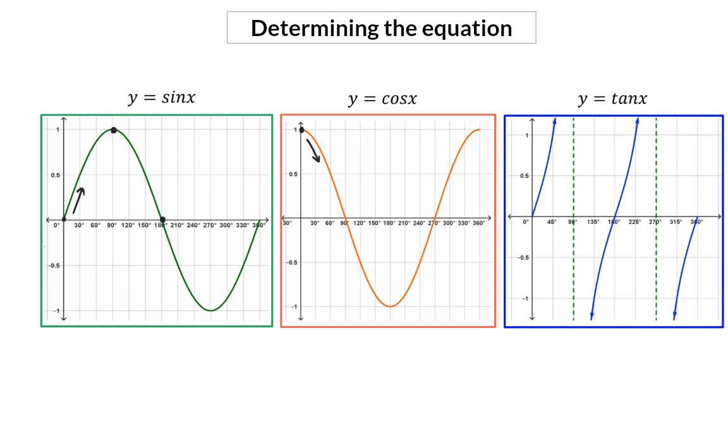For the tan graph we will focus on two important points. The first one is the coordinate exactly in the middle of our two asymptotes. For the mother graph that is at 180 and zero. The second important point to remember is the 45 and 1 point.